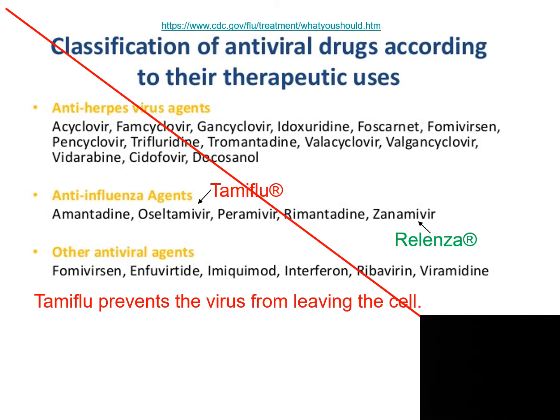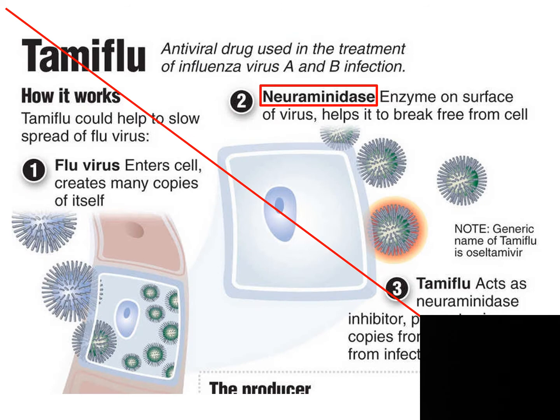These are some other measures that also inhibit viruses. You've probably heard of Tamiflu. Tamiflu is a drug that prevents the virus from leaving the cell. Once the virus enters the cell, it has to make hundreds and thousands of copies of itself. Then the virus will leave the cell. In order to leave the cell, the enzyme on the surface of the virus is going to help the virus break loose. Tamiflu inhibits that enzyme.